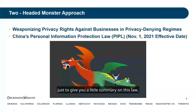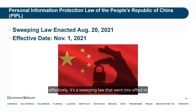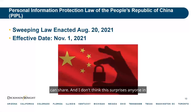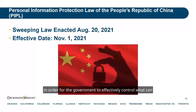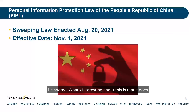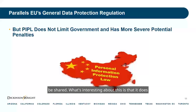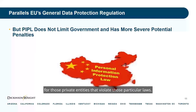To give a brief summary of this law: it is a sweeping law that went into effect in 2021, and it applies to private businesses and what they can share. This law goes into place in order for the government to effectively control what information can and cannot be shared. What's interesting is that it does not limit the government, but it has more severe penalties for private entities that violate those particular laws.